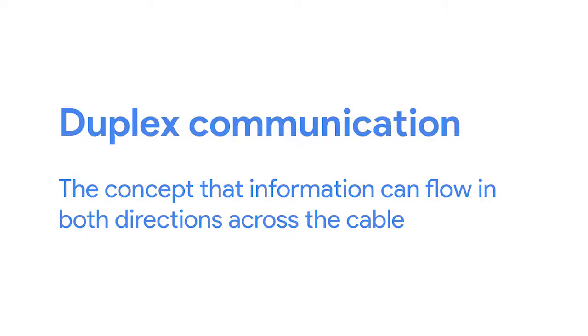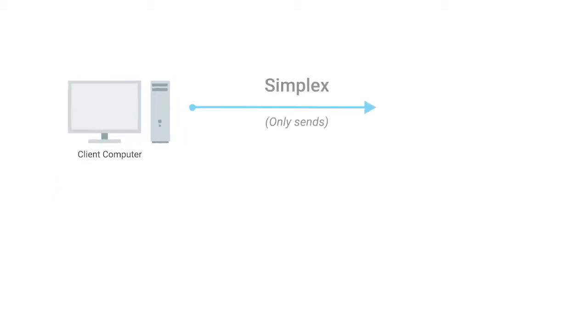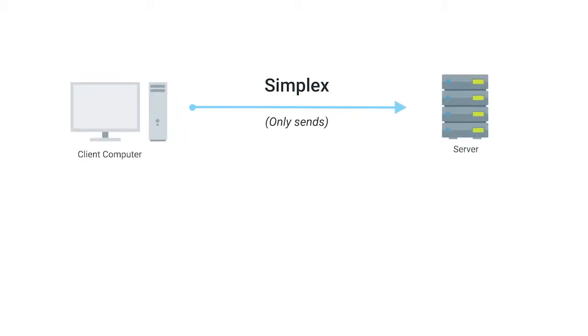In all modern forms of networking, it's important to know that these cables allow for duplex communication. Duplex communication is the concept that information can flow in both directions across the cable. A process called simplex communication, on the other hand, is unidirectional — think about a baby monitor, where the transmission of data only goes in one direction, making it a simplex communication.